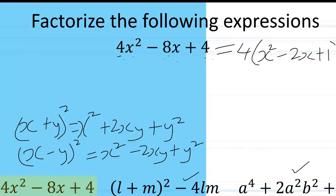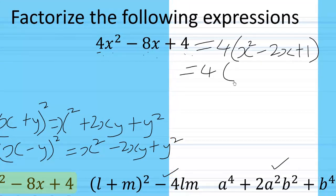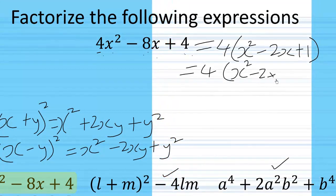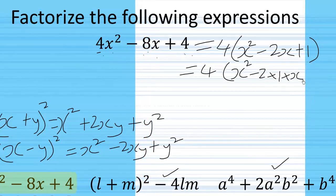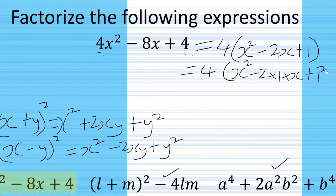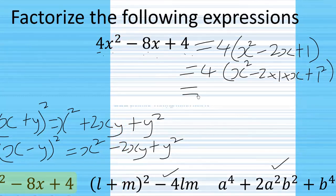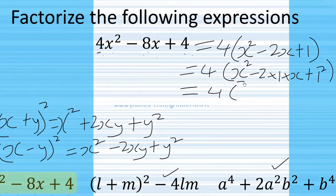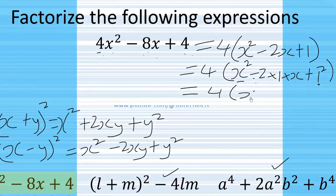So we can better rewrite this. Well, we have x squared minus 2 times 1 times x plus 1 squared. So it means this is 4 into brackets x minus 1 all squared.